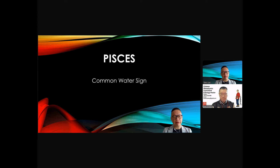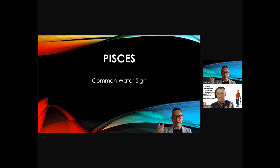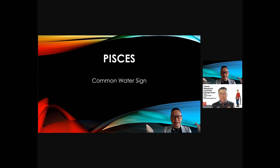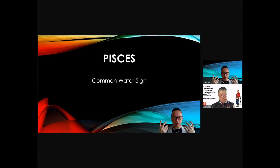We also have Cancer and Scorpio as water signs. Cancer is a moving water sign — think of a sea or ocean, large bodies of water moving all the time. Scorpio is like a deep, dark lake which is still at the surface; you don't know what's going on underneath. Pisces is both movable and fixed, so that's what we call a common water sign.